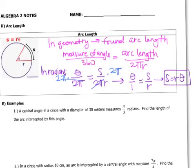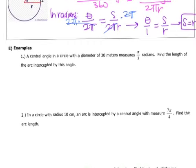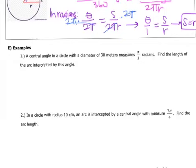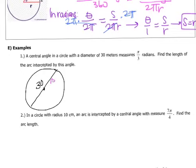All right, if we look at some examples here, a central angle in a circle with a diameter of 30 meters measures π. So we have a central angle in a circle that has a diameter of 30 meters. So let's draw our picture out. So here's my circle. I know that the diameter is 30 meters, which means that the radius is what? We know that the radius is 15.